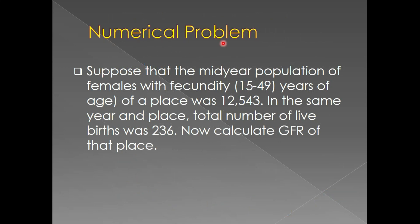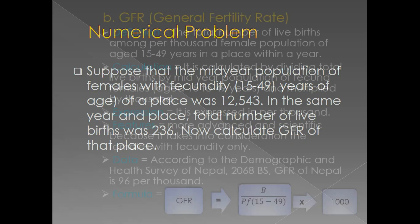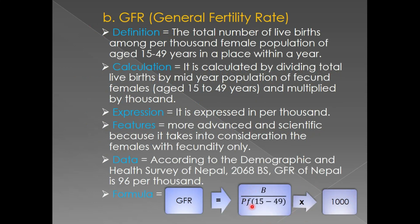Moving on to the next slide, we have a numerical problem. You can pause the video and solve it yourself. Suppose the mid-year population of females with reproductive capacity aged 15 to 49 years of a place was 12,543. In the same year and place, the total number of live births was 236. Calculate the GFR of that place. Given: PF (15 to 49) = 12,543 and B = 236. Use the formula: GFR = B divided by PF (15 to 49), multiplied by 1000.